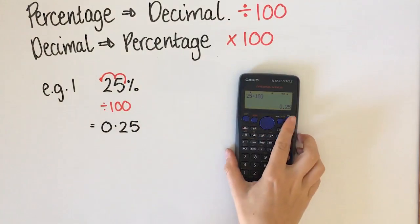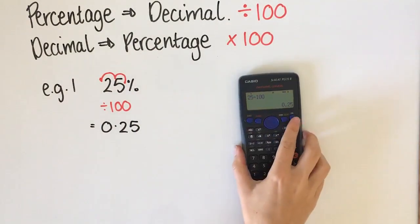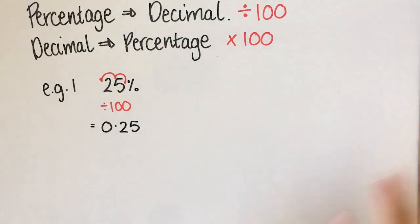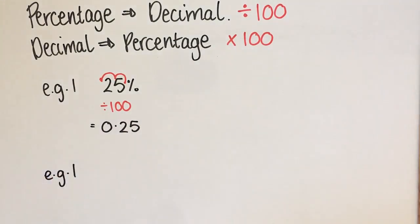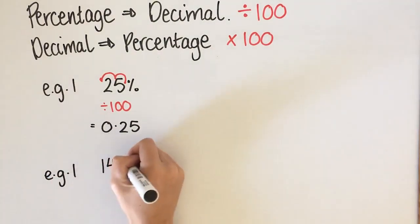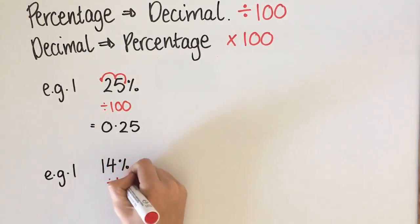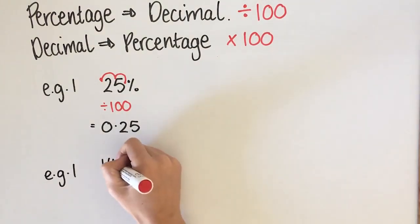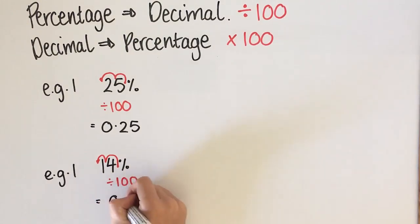For the next couple of examples we're going to try doing it without the calculator, but remember you can just physically divide it on the calculator if you want to. Our second example is 14%. Converting it to a decimal means dividing by 100, which means moving the decimal point twice, so I end up with 0.14.